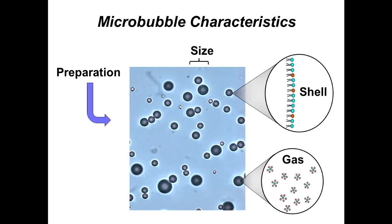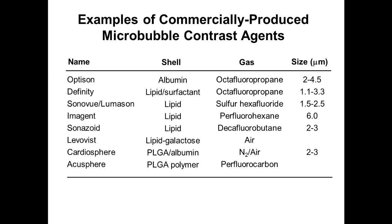There are differences in commercially produced micro-bubble agents in terms of all of these characteristics. Listed here are examples of commercially produced micro-bubble contrast agents. The first four on the list have been approved at some time in the United States for use in humans. The top three — Optison, Definity, and Lumason — are approved and currently available for use in the United States. There are differences in the shell between these agents, ranging from lipid to albumin to different polymers, and the gases inside them are listed as well.